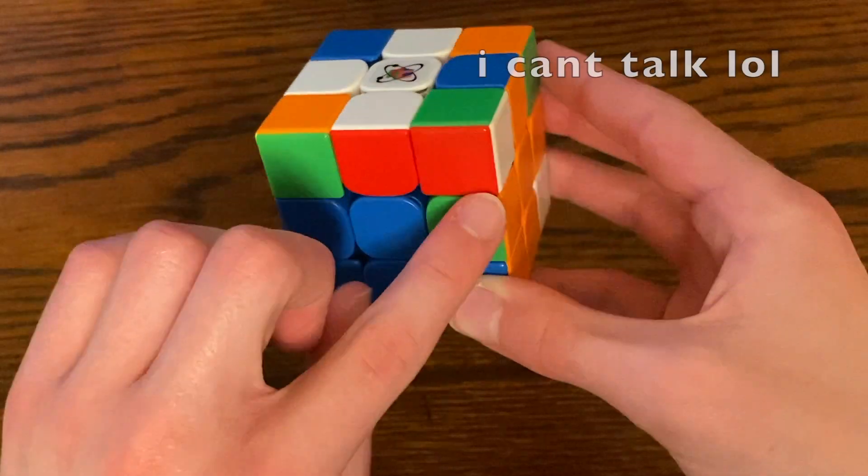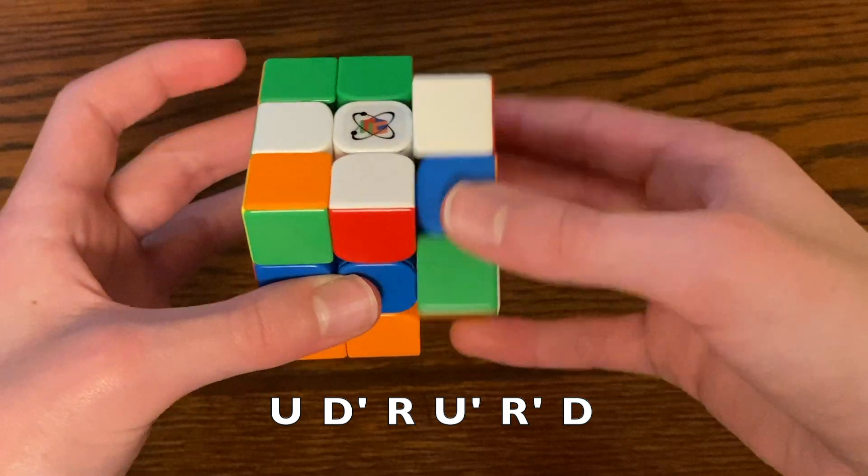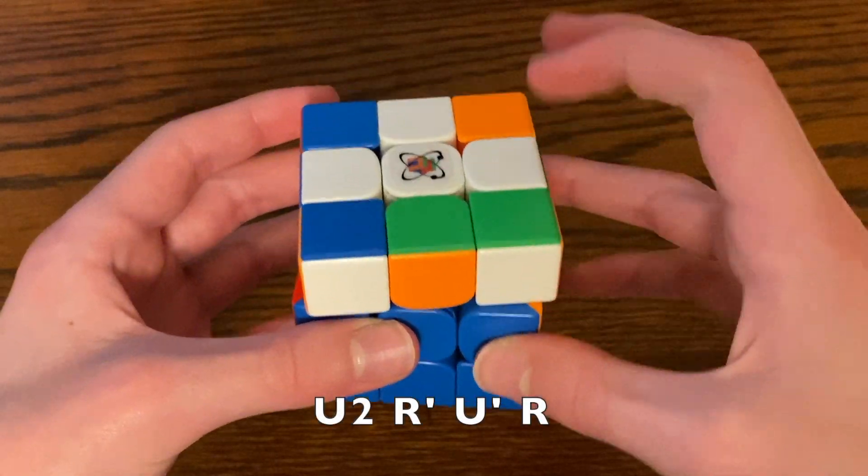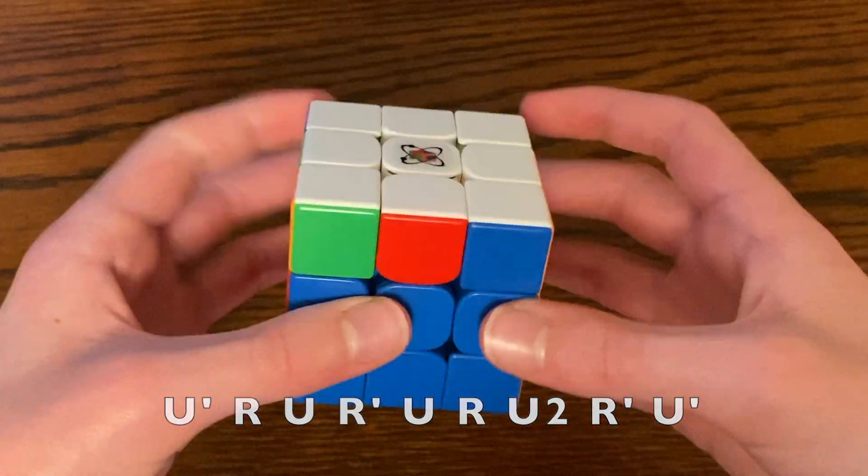And I also saw this edge in this corner over here. When I insert this, it's going to give me a free pair. So I'm going to insert it. And then I have a Sune G-perm.